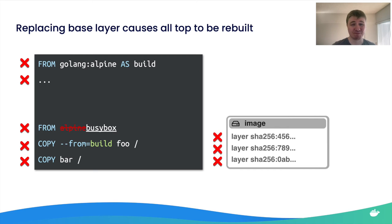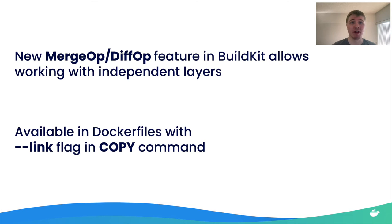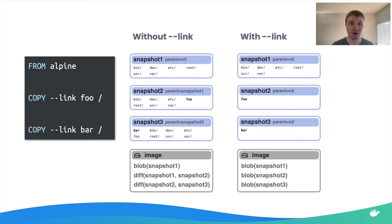To solve this, we added two new operations in the BuildKit engine called MergeOp and DiffOp. These allow working with independent layers so that changing one layer doesn't invalidate the cache for subsequent layers. This is exposed in the Dockerfile with the new --link flag in the COPY command. Without --link, copying a file places it on top of the Alpine image layers; with --link, it goes to a completely separate location and lives on its own.